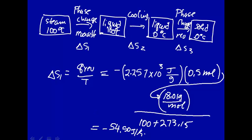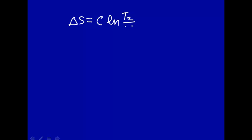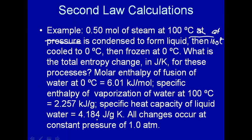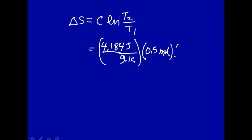Now let's look at the second step: we're taking a liquid and cooling it down to a liquid — no phase change occurring. We're changing the temperature, so this is a non-isothermal change. We know the heat capacity, so we can calculate the entropy change. Delta S2 equals heat capacity times the natural log of the final temperature divided by the initial temperature. The specific heat capacity of liquid water is 4.184 joule per gram kelvin — that's the intrinsic heat capacity.